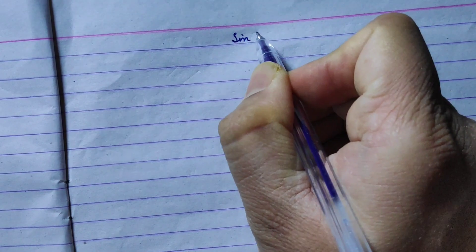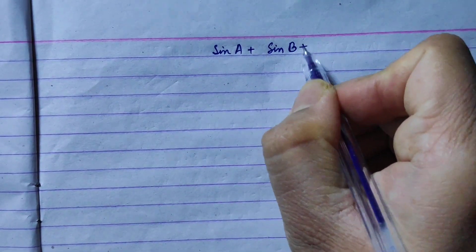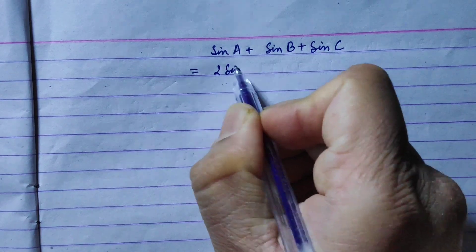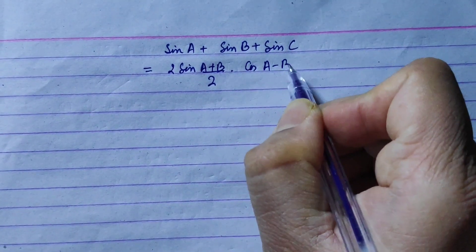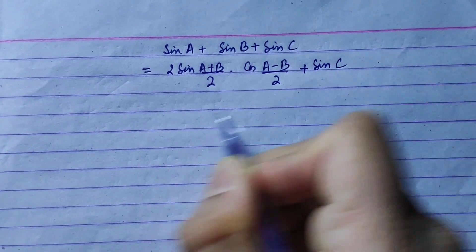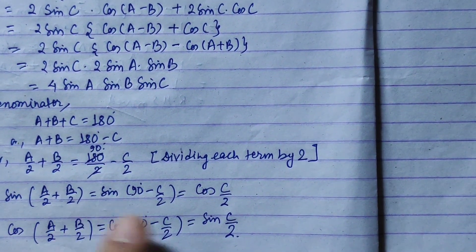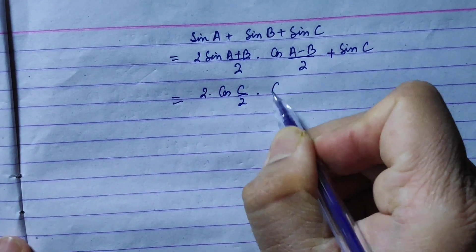For the denominator sinA + sinB + sinC: applying sum-to-product, sinA + sinB = 2·sin((a+b)/2)·cos((a−b)/2). Using the condition, sin((a+b)/2) = cos(c/2). So sinA + sinB = 2·cos(c/2)·cos((a−b)/2), plus sinC.